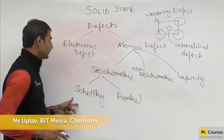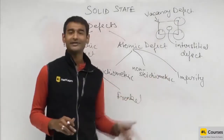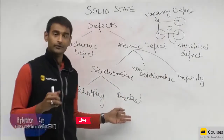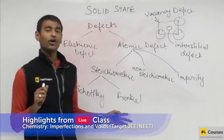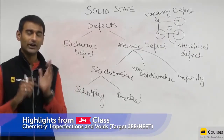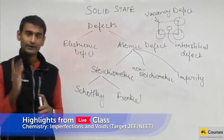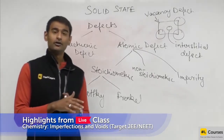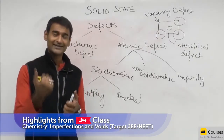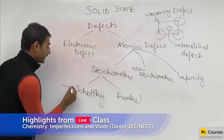Today we will be discussing only about Schottky and Frenkel. I will give you a very good trick to remember this: the defect which will lead to a shorter — meaning lesser — density is Schottky defect.